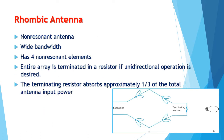Next, we have the rhombic antenna. The rhombic antenna is a non-resonant antenna that is capable of operating satisfactorily over a relatively wide bandwidth, making it ideally suited for high frequency transmission. It is made up of four non-resonant elements, each several wavelengths long. The entire array is terminated in a resistor if unidirectional operation is desired. The terminating resistor absorbs approximately one-third of the total antenna input power.